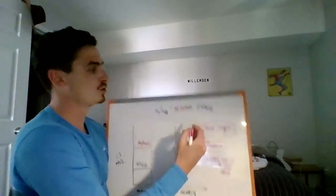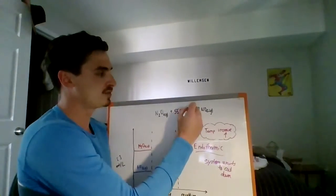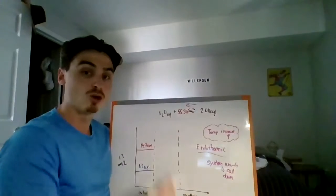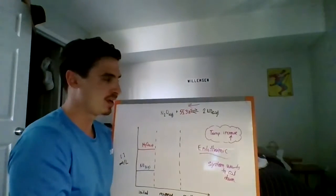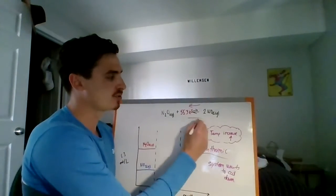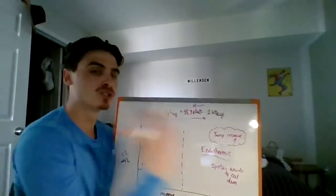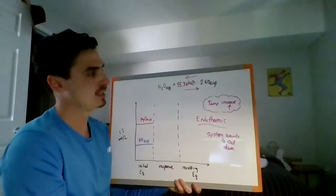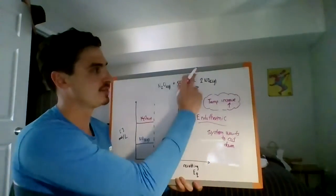So if the system wants to cool down, is it going to shift to the left where it releases heat? Or is it going to want to shift to the right where it actually absorbs heat? It's going to shift to the right.